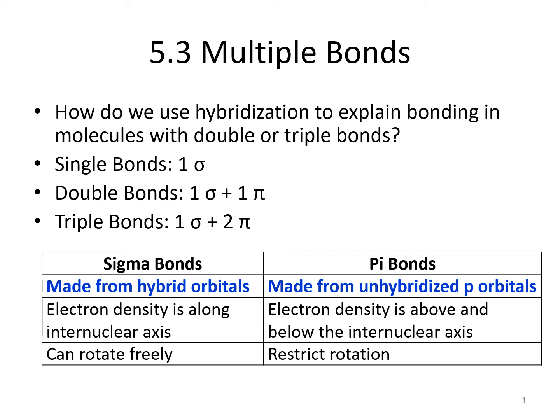We've looked at hybridization to make single bonds and lone pairs. What happens when there is a double or triple bond? Single bonds are made with one sigma bond, double bonds contain one sigma and one pi, and triple bonds contain one sigma and two pi bonds. Each bond, whether single, double, or triple, has one sigma bond.